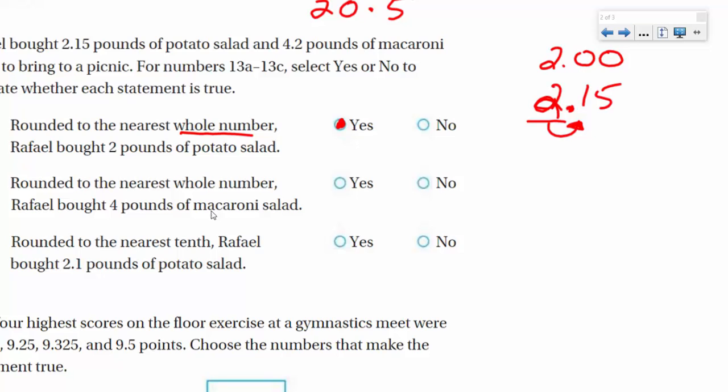Yes, that's 2. Rounded to the nearest whole number, Rafael bought 4 pounds of macaroni salad. Again, we're looking at that whole number. The 2 is 4 or less, let it rest. So, yes, that's going to be 4. And the 2 just turns into 0. Rounded to the nearest tenth, Rafael bought 2.1 pounds of potato salad.